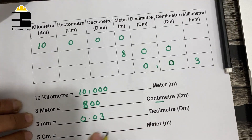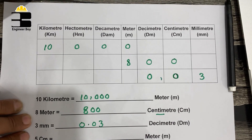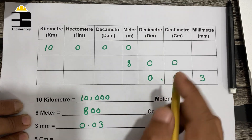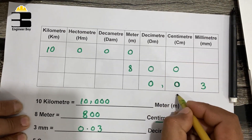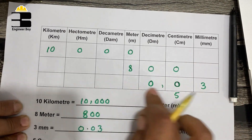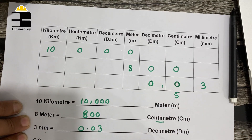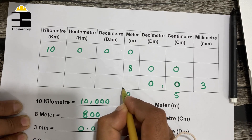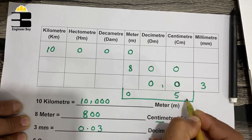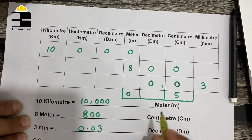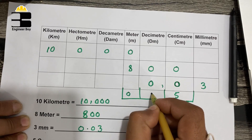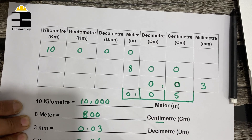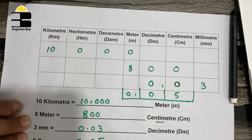And finally, let's just convert 5 centimeters into meters. For that, I'm going to put 5 in the centimeters cell — that is just 5. We are going to convert that into meters, so let me just put zero over there. Now let's just fill the remaining with zero. It means we just got 0.05 meters.